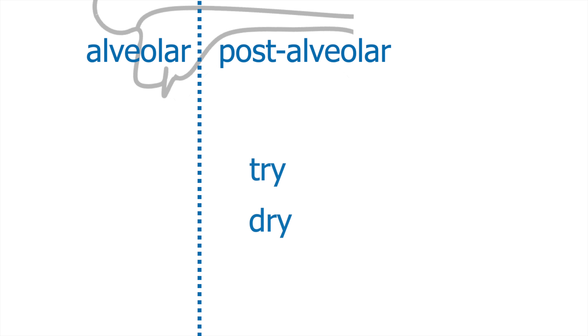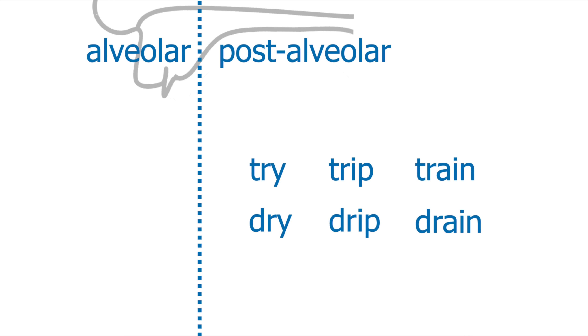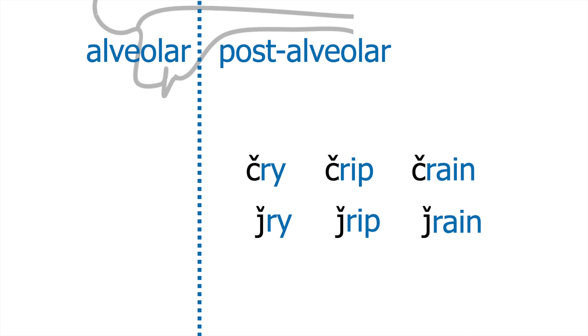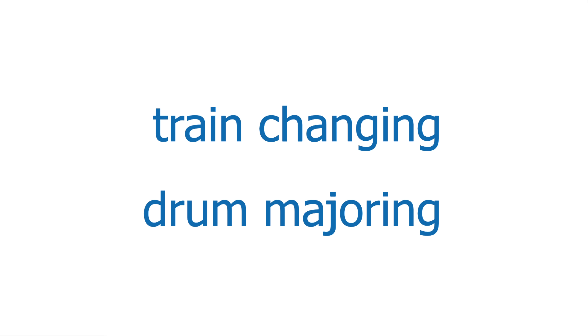And here's the really interesting thing. Millions of speakers on both sides of the Atlantic have taken words like 'try' and 'dry,' 'trip' and 'drip,' 'train' and 'drain,' and gone a stage further — actually replacing the T and D with CH and J. I'm going to call this 'train changing' and 'drum majoring.' Note that the R stays right where it is: 'train' does not become 'chain' — it becomes 'train' — and 'drum' does not become 'jum,' it becomes 'drum.'